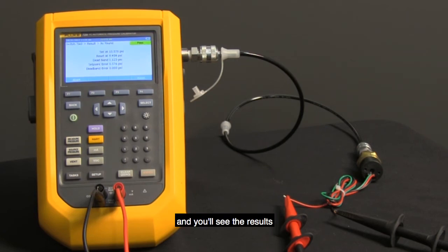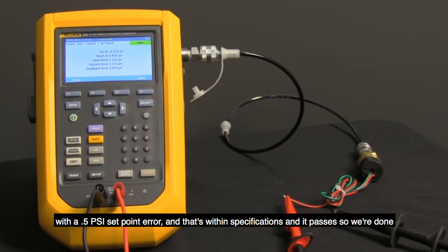And you'll see the results. This is what gets documented. It's set at 10.5, reset about 9.5. Dead band was about 1, with a 0.5 psi set point error, and that's within specifications, and it passes. So we're done.